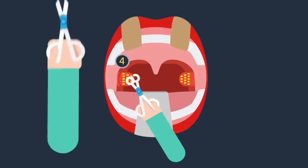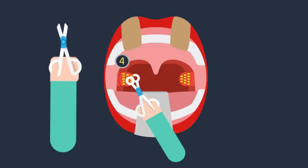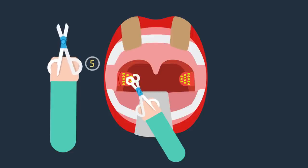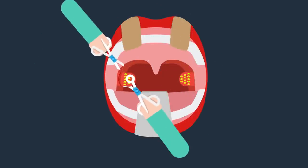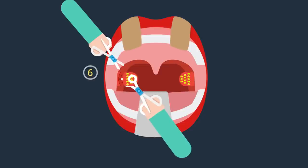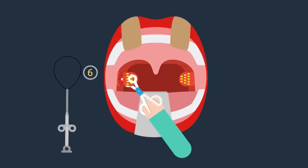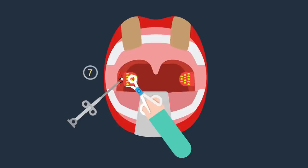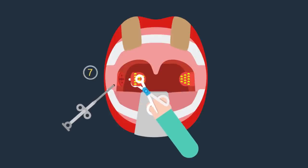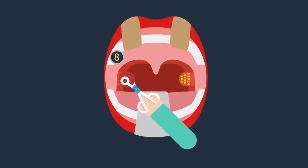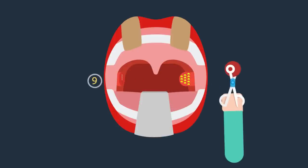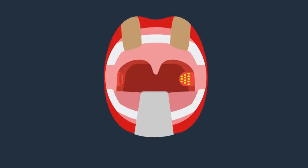4. A blunt curved scissors may be used to dissect the tonsil from the peritonsillar tissue and separate its upper pole. 5. Tonsil is held at its upper pole and traction applied downwards and medially until the lower pole is reached. 6. Wire loop of the tonsillar snare is threaded over the tonsil onto its pedicle and tightened. 7. Pedicle is cut and the tonsil removed. 8. A gauze sponge is placed in the fossa and pressure applied for a few minutes. 9. Bleeding points are tied with silk. The procedure is repeated on the other side.